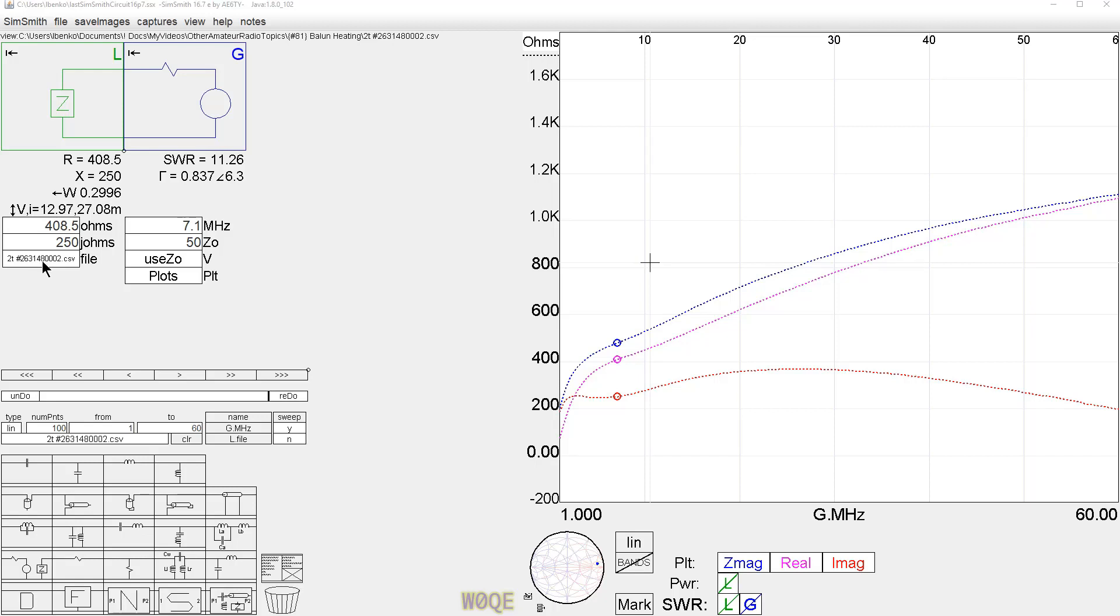This ferrite core right here gave me pretty much what I wanted. So I measured those on a VNA and this is the result. The overall impedance is shown in blue, the real part is shown in pink, and the imaginary part is shown in red. It's inductive over the whole range but the resistive piece dominates pretty much over the whole range from frequencies above about 2.7 megahertz. And it does exactly what I was looking for.